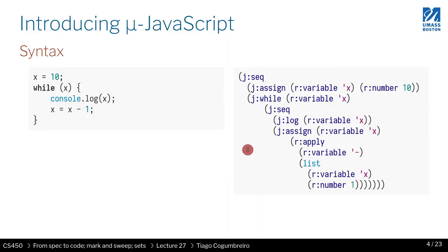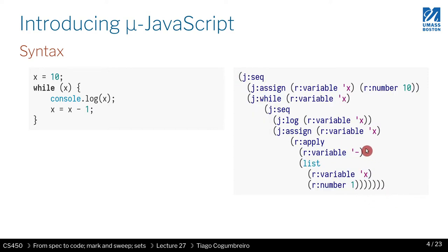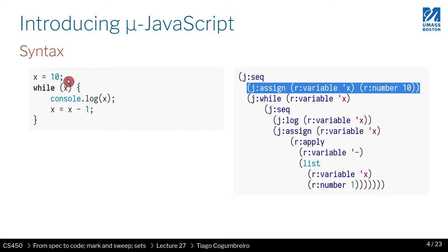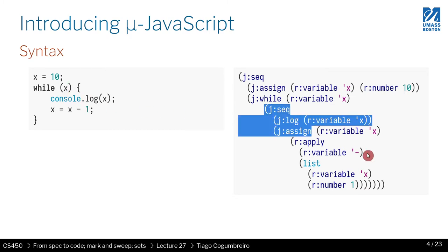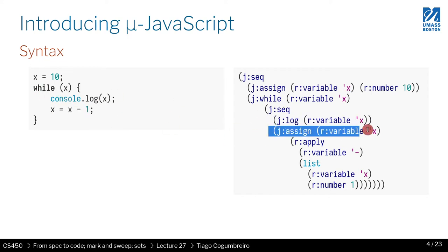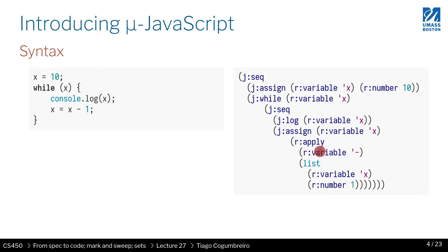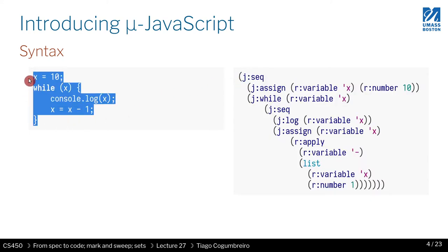Now let's look at the program I ran. It's exactly the same program, but in my AST it maps to the AST on the right-hand side. You can see the assign and then the while loop. The condition is X, and the body has two instructions — a sequence where the first one is a log and the second is an assignment with a function call to minus with operands X and 1.